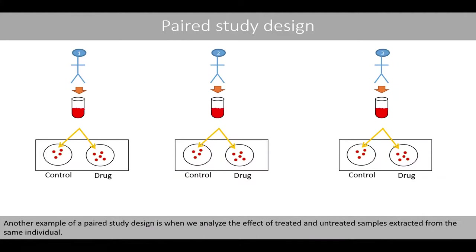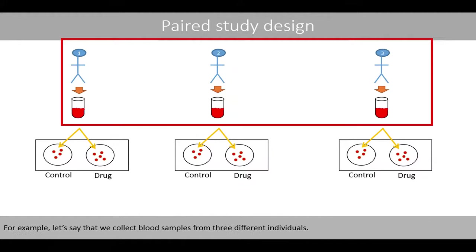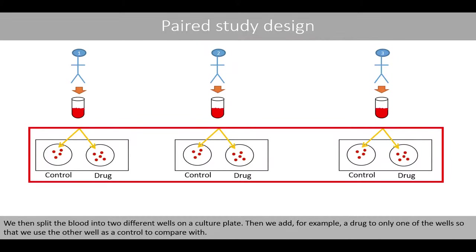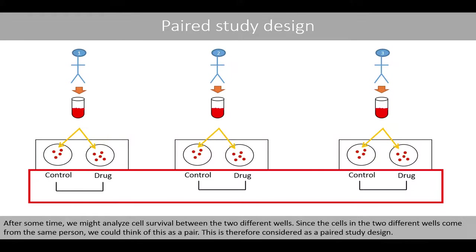Another example of a paired study design is when we analyze the effect of treated and untreated samples extracted from the same individuals. For example, we collect blood samples from three different individuals, split the blood into two different wells on a culture plate, and then add a drug to only one of the wells, using the other well as a control. After some time, we might analyze cell survival between the two wells. Since the cells in the two wells come from the same person, we consider this as a paired study design.